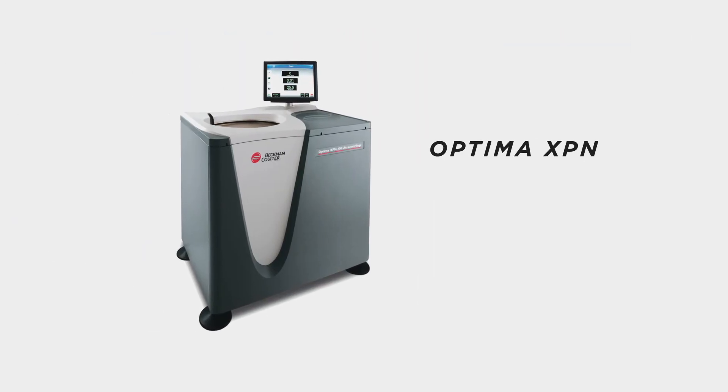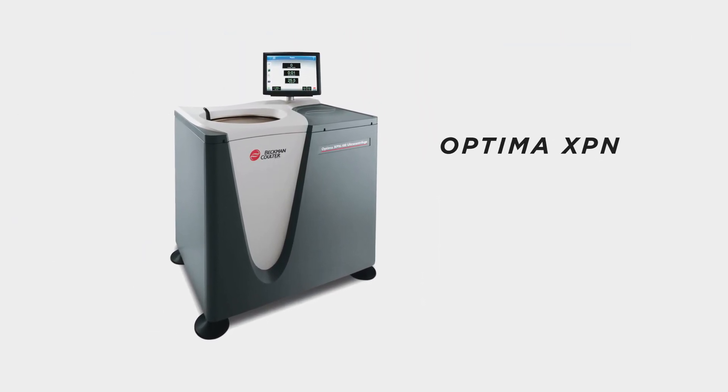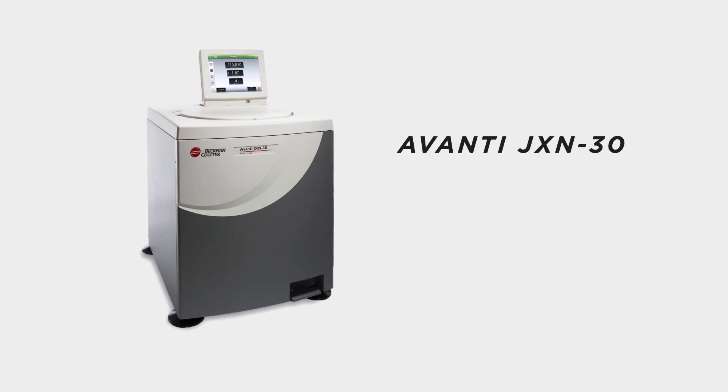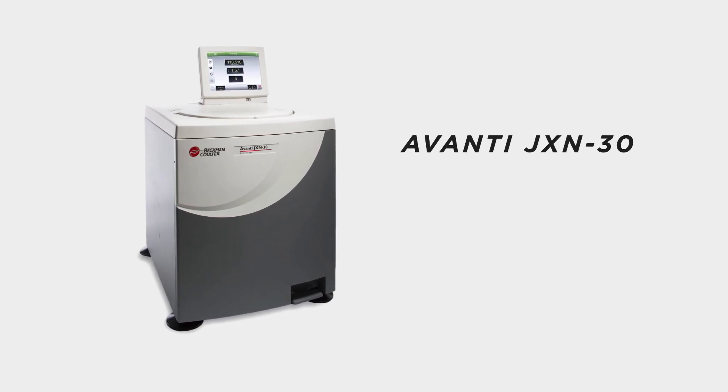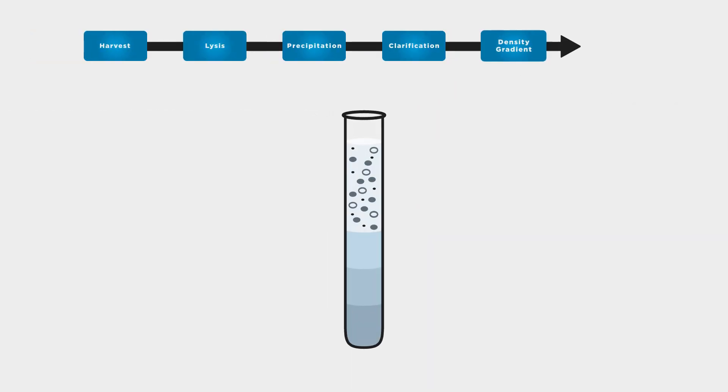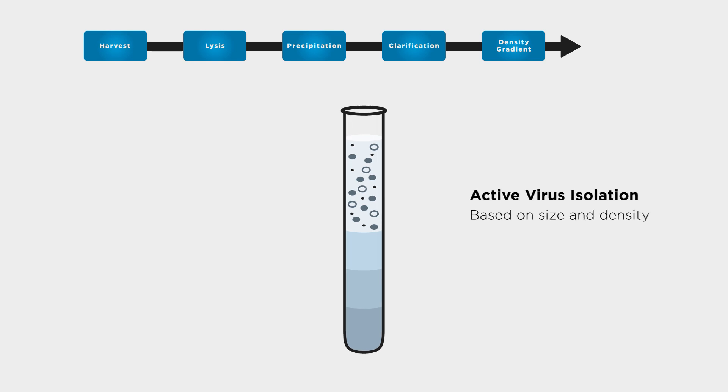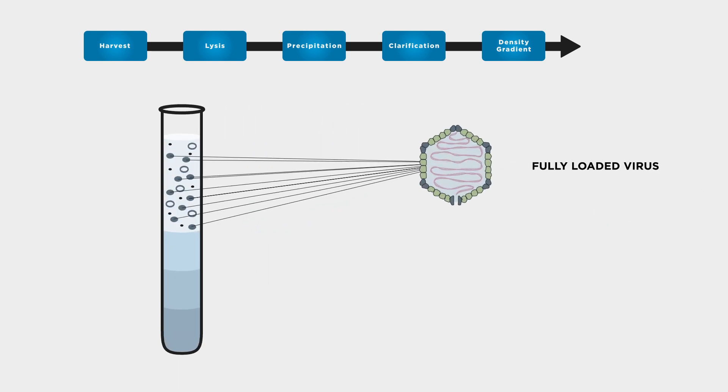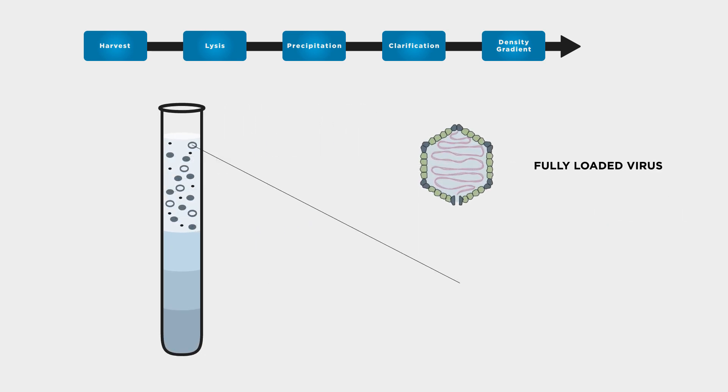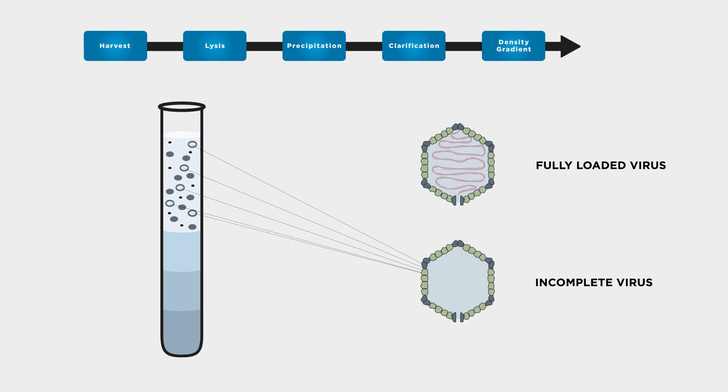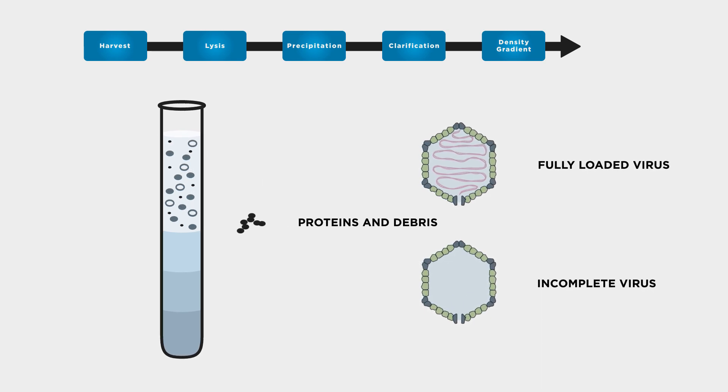High-performance, high-capacity centrifugation can maximize yield, improving viral fraction purity. Density gradient ultra-centrifugation is used to isolate active virus on the basis of its size and density, with the additional benefit of purifying fully loaded virus from empty particles, incomplete virus, proteins, and any residual cellular debris.